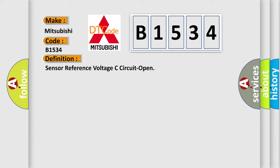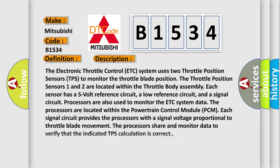The basic definition is: Sensor Reference Voltage C Circuit Open. The electronic throttle control (ETC) system uses two throttle position sensors (TPS) to monitor the throttle blade position. The throttle position sensors one and two are located within the throttle body assembly. Each sensor has a five-volt reference circuit, a low reference circuit, and a signal circuit. Processors located within the powertrain control module (PCM) are also used to monitor the ETC system data. Each signal circuit provides the processors with a signal voltage proportional to throttle blade movement, and the processors share and monitor data to verify that the indicated TPS calculation is correct.